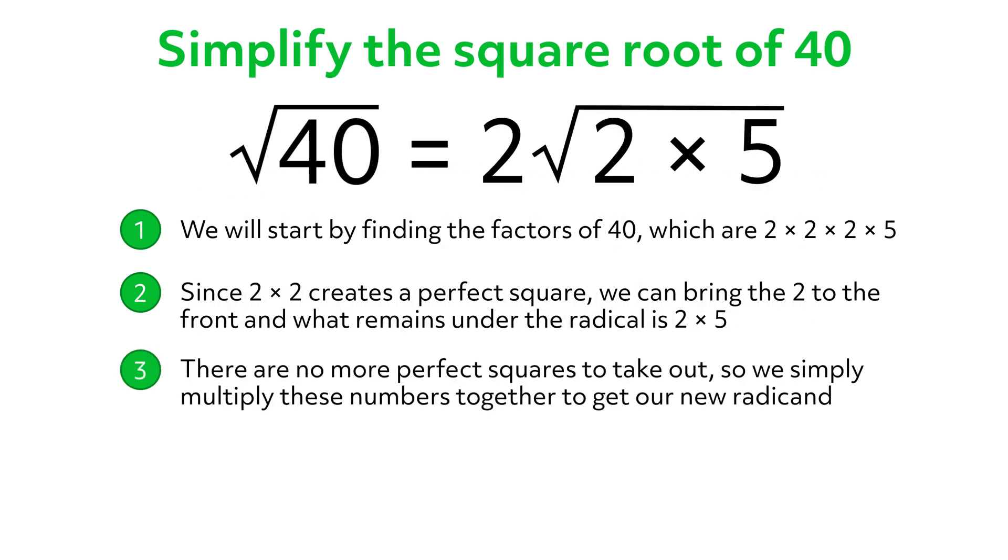There are no more perfect squares to take out, so we simply multiply these numbers together to get our new radicand. Therefore, the square root of 40 is equal to 2 square root of 10.